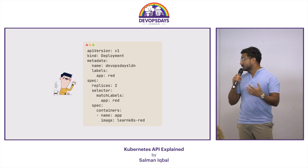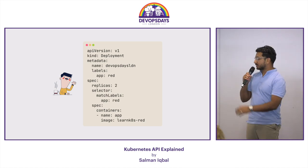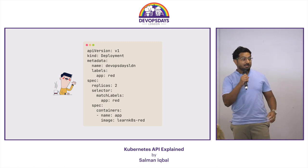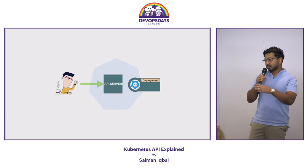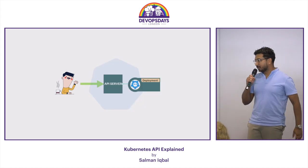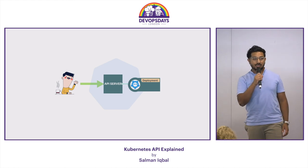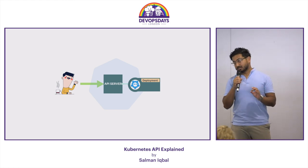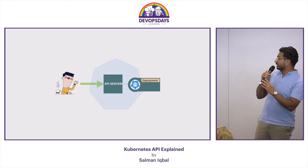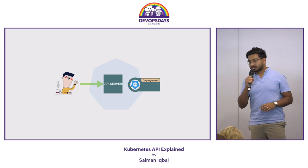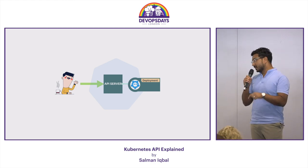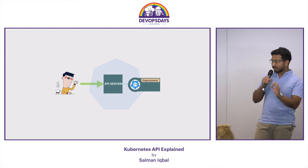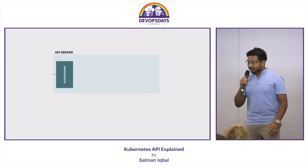A YAML file that looks something like this — you create a deployment, stick in your containers, put some information in, and then you can take that YAML file, use your kubectl command line, and submit it to the Kubernetes cluster. The cluster receives the request, but before anything can happen, it ends up in a component called the API server, and that's what we're going to talk about today.